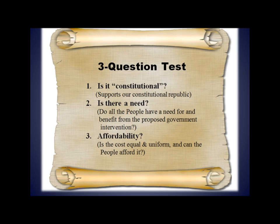You can read my reasons for these three questions in the link below this video. I briefly explain the principles of life, liberty, and property, which should provide the grounds for each of the ten proposed amendments. Those questions are: Is it constitutional — does it support our constitutional republic? Is there a need — do all the people have a need for and benefit from the proposed government intervention? And is it affordable — can the people afford it and is the cost equal and uniform? I will also look at the enabling legislation behind these proposed amendments, which is necessary to activate each proposed change. Unless I state otherwise, the enabling legislation does not go into effect until the Constitution amendment is passed by voters at the ballot box in November.